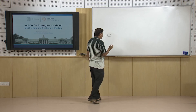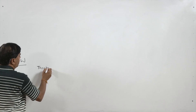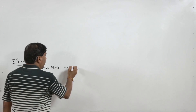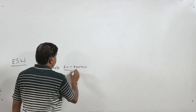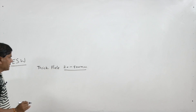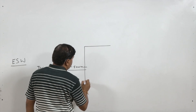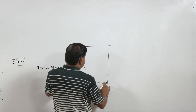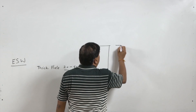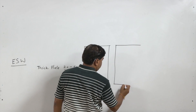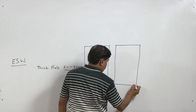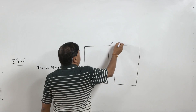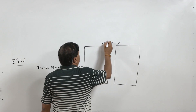This process is primarily used for joining very thick plates. Thickness may range from 20 mm to 500 mm. If you see the nature of the process, these are the two plates to be welded in the front view — this is the width and this is the height of the plate — and the thickness will be in this direction, which may range from 20 to 500 mm.